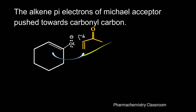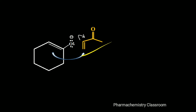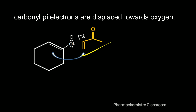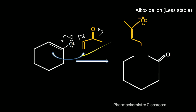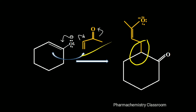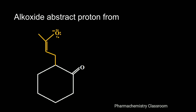The carbonyl pi electrons are displaced towards the oxygen to get a carbon-carbon single bond between the Michael donor and Michael acceptor. Here we are getting an alkoxide ion, which is less stable. This is the bond formed between the Michael acceptor and Michael donor to give the alkoxide ion.